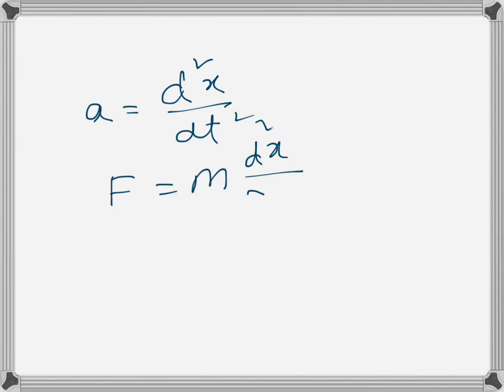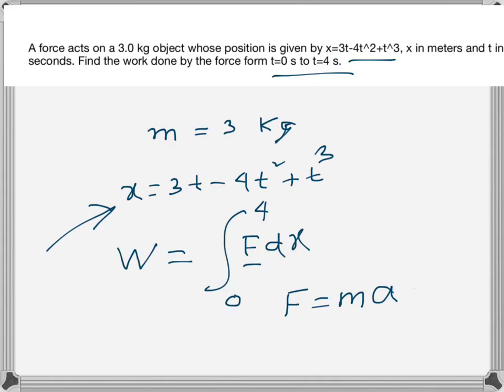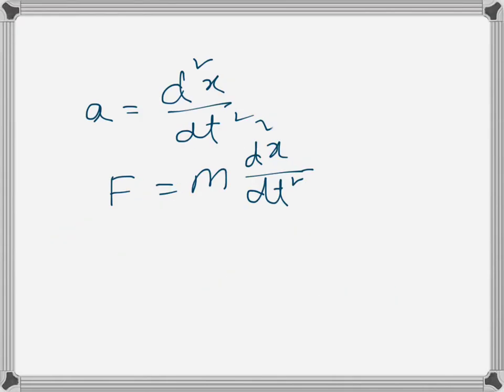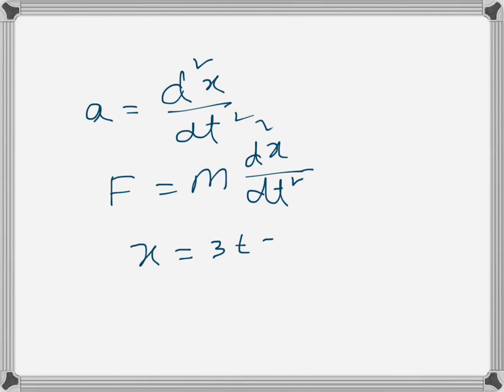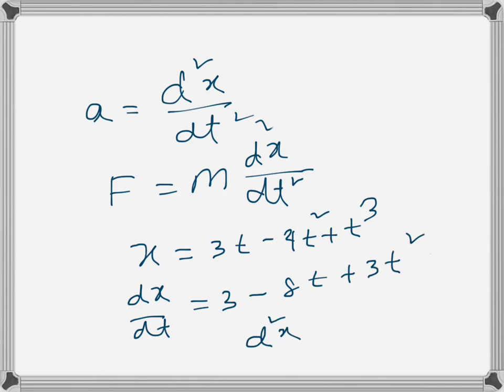I will find the first and second derivative of x. So x is equal to 3t minus 4t squared plus t cubed. That gives us dx over dt is equal to 3 minus 8t plus 3t squared, and the second derivative will be d squared x dt squared equals minus 8 plus 6t.